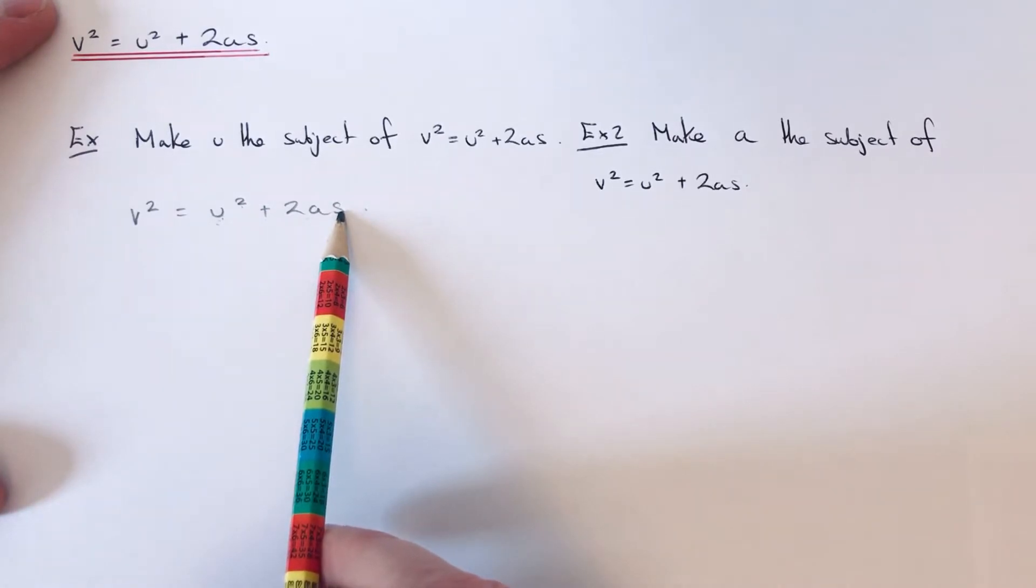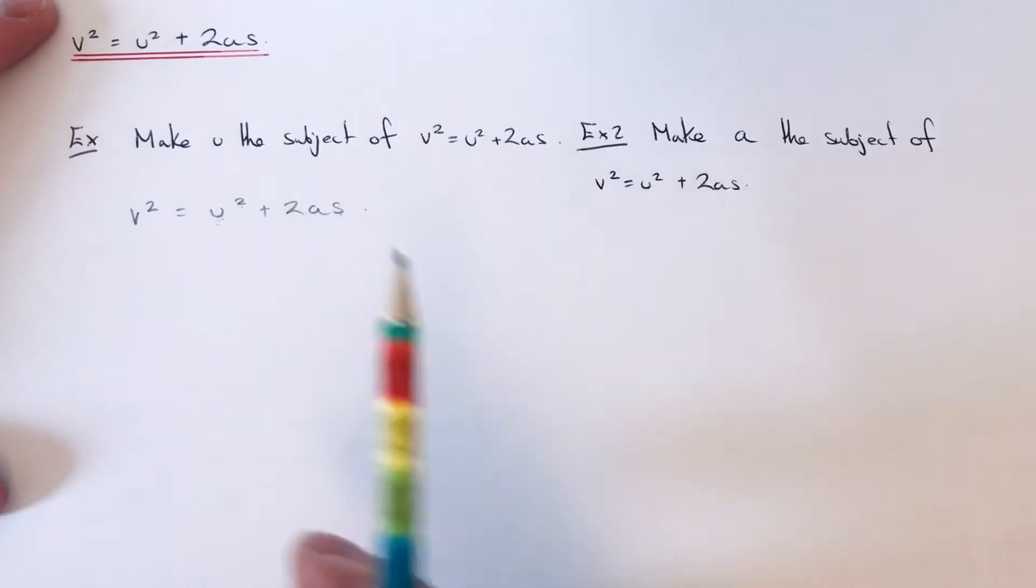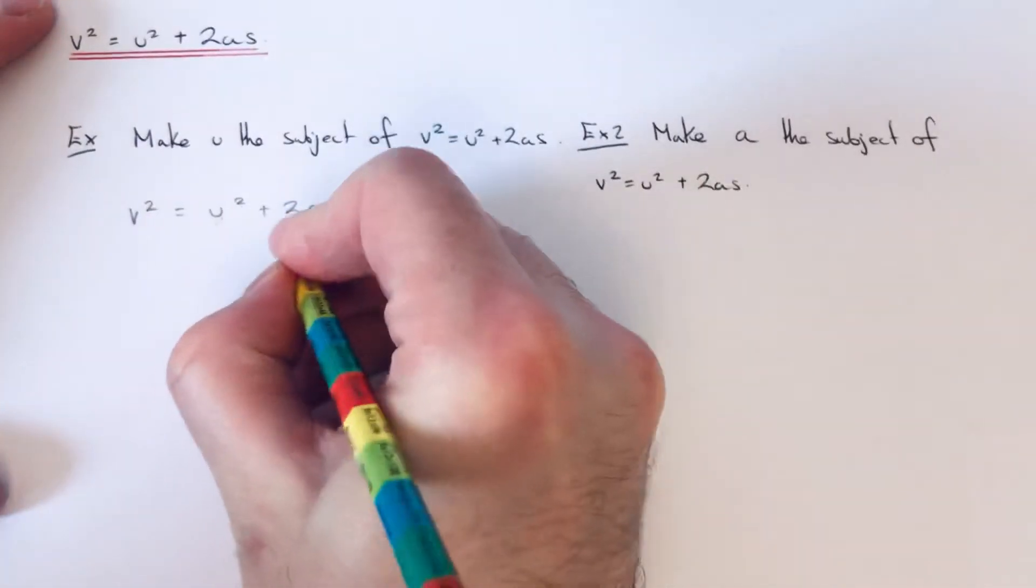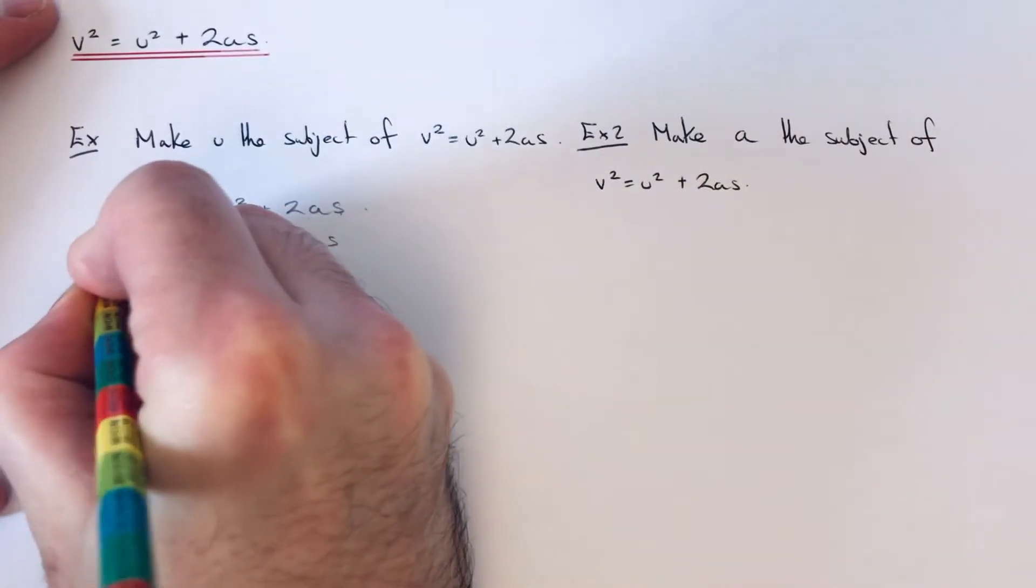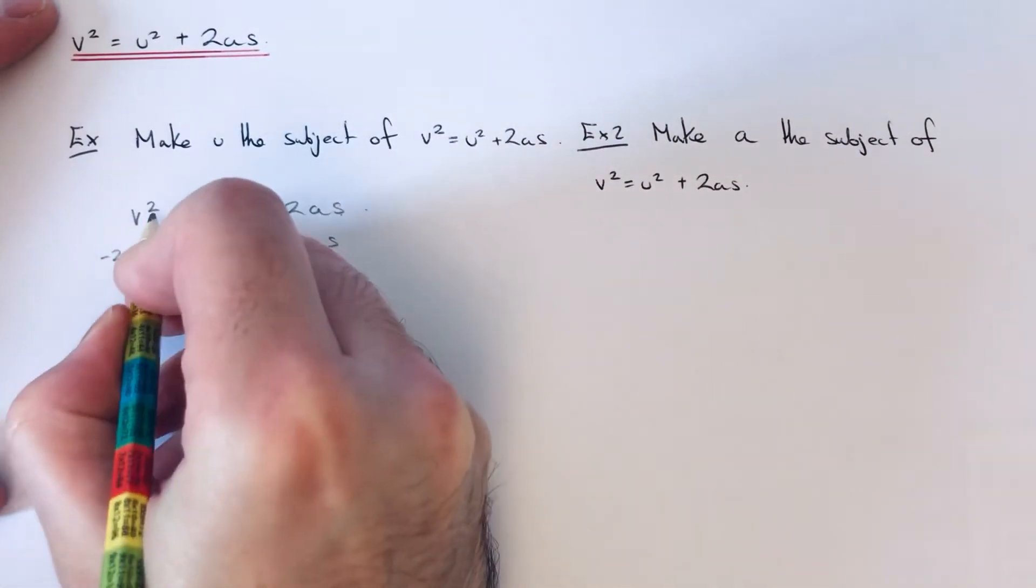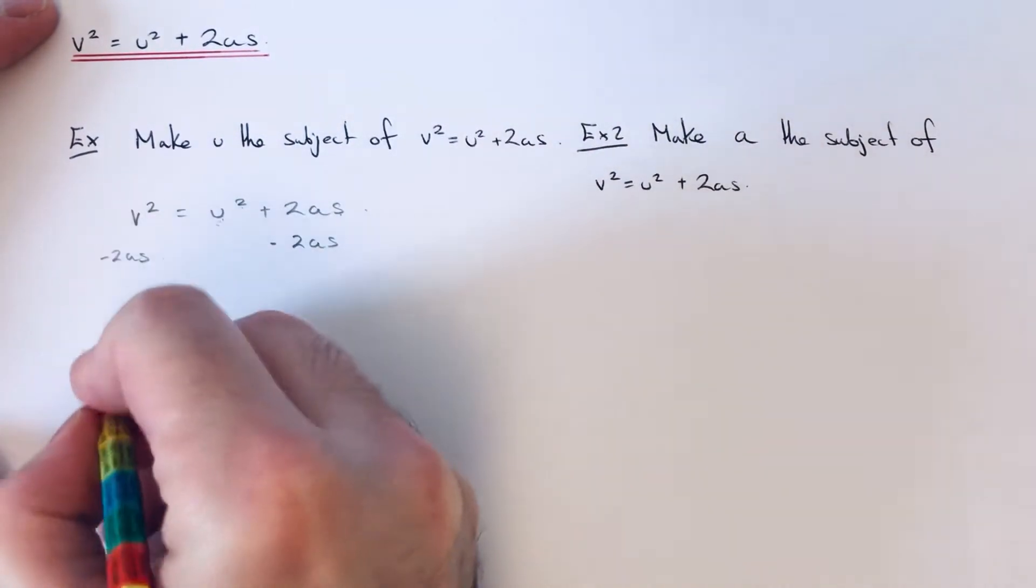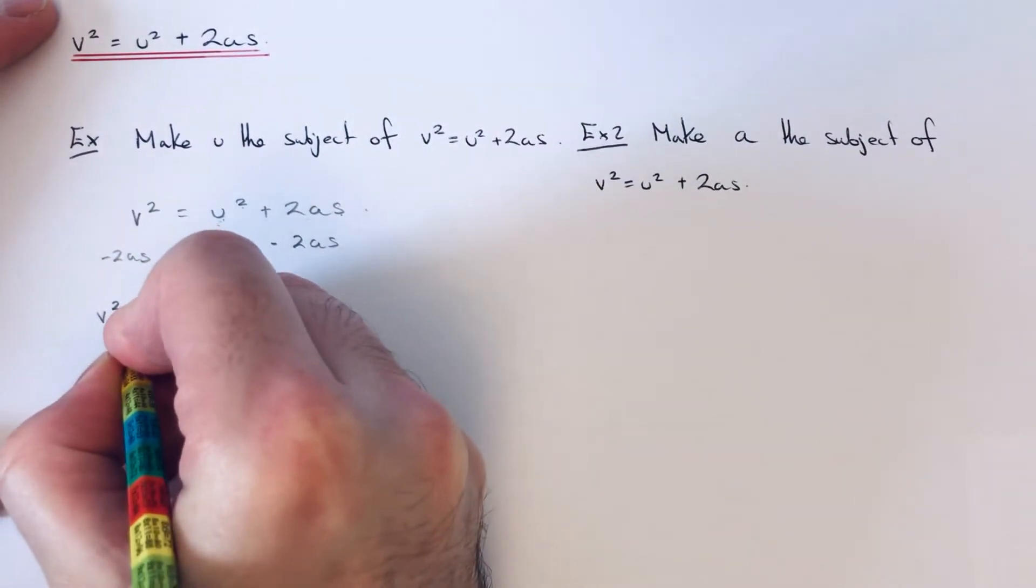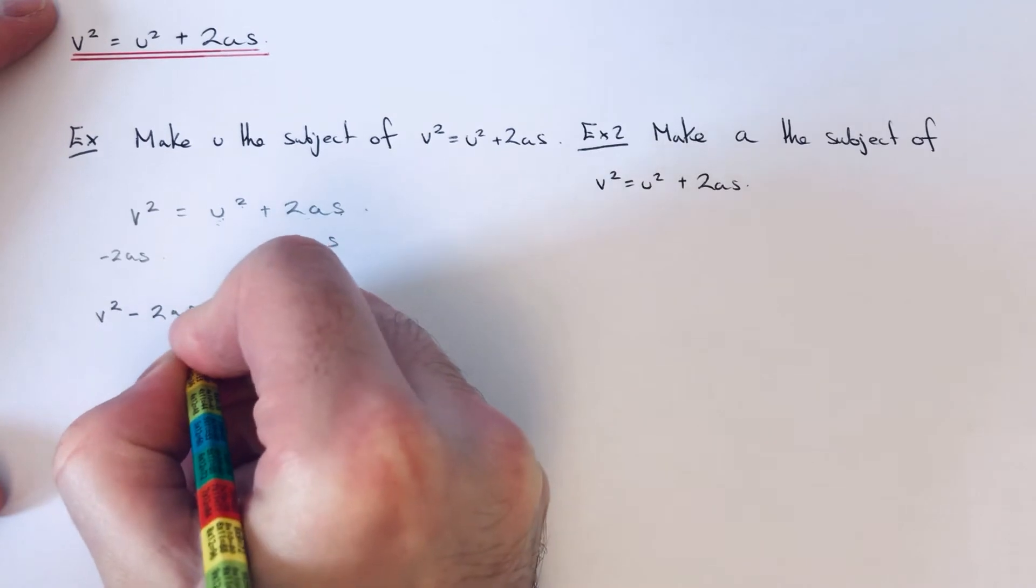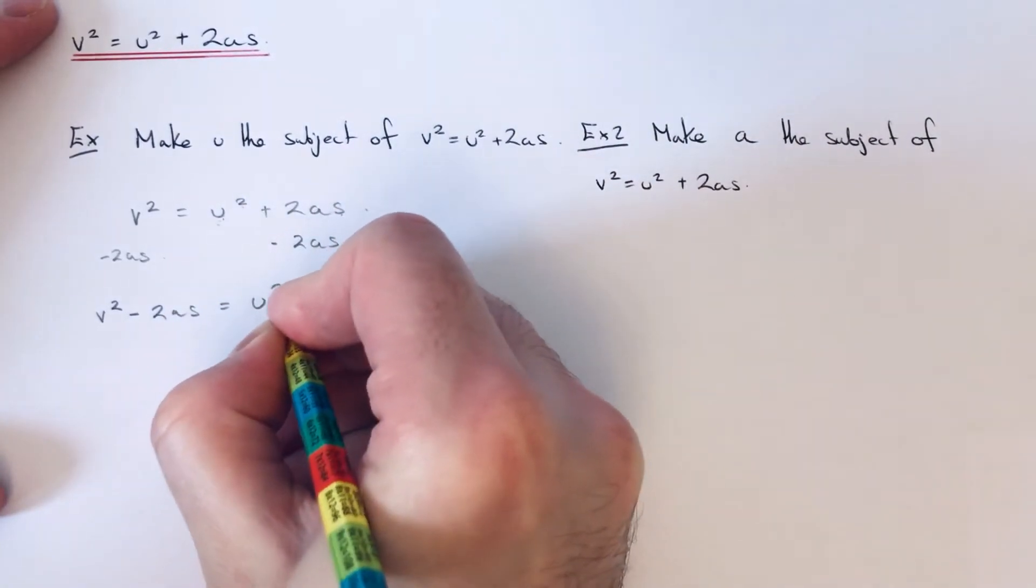So we need to do the opposite in reverse order. The first thing I'm going to do is minus 2as off both sides. On the left side we have v² - 2as, and that will now equal u².